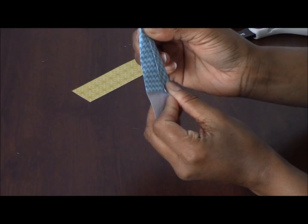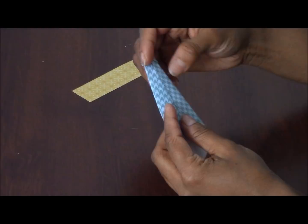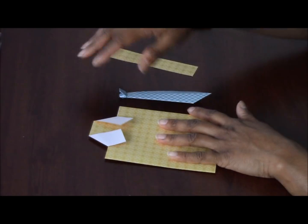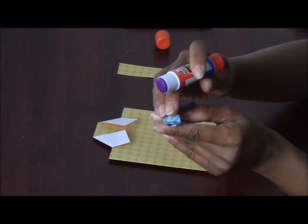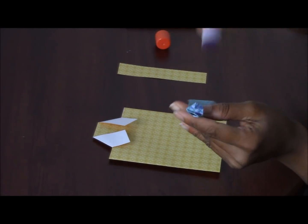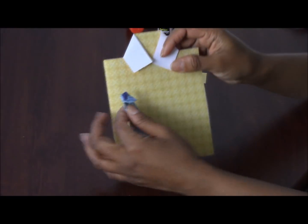Turn around and see, now it looks like a tie. Put some glue on the flap of the tie and stick it on the collar of the shirt.